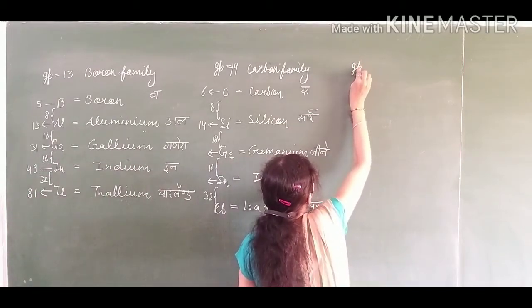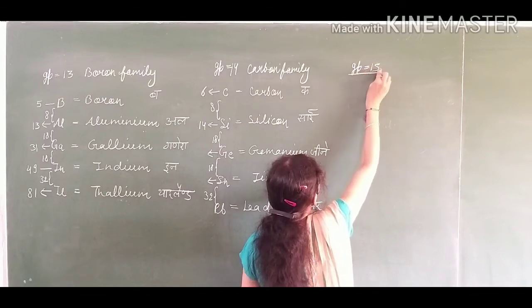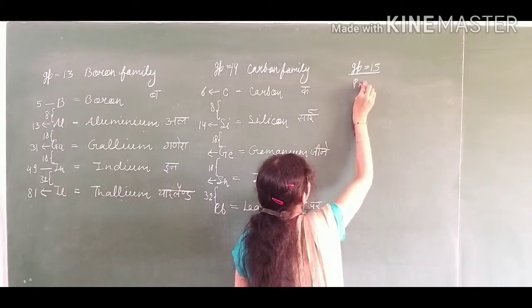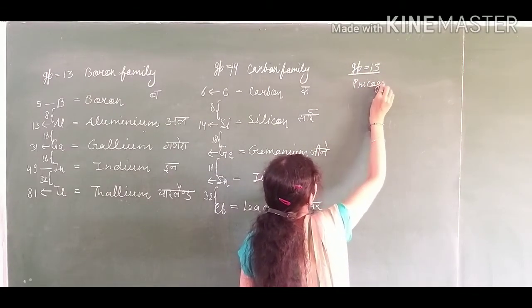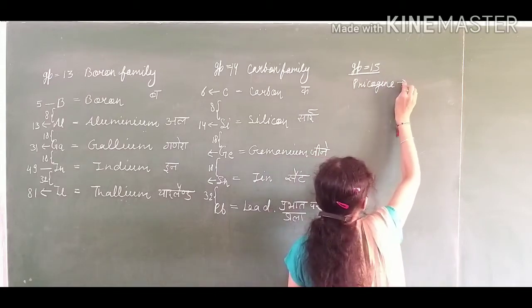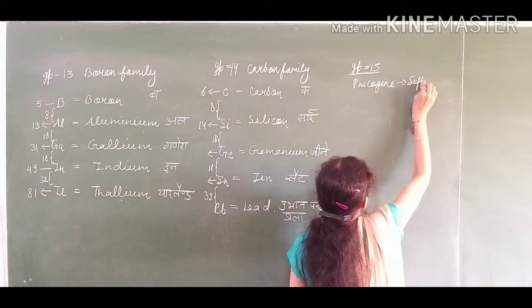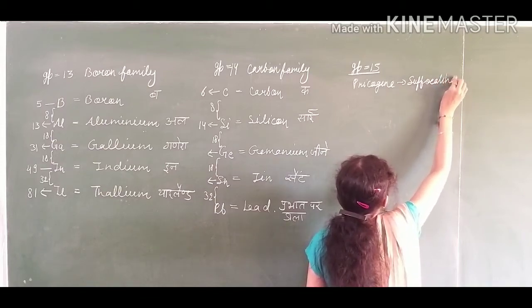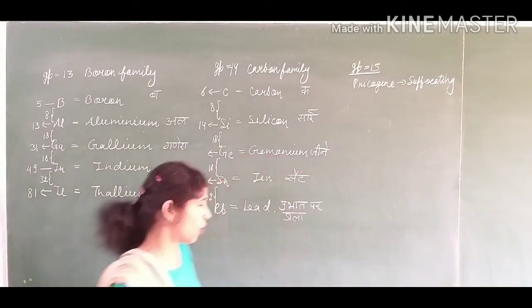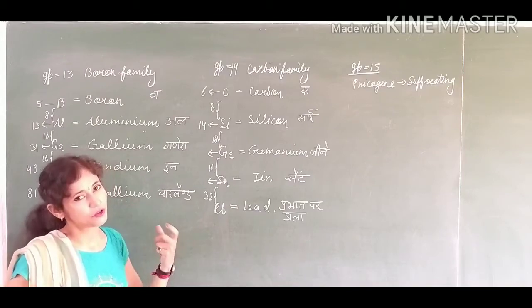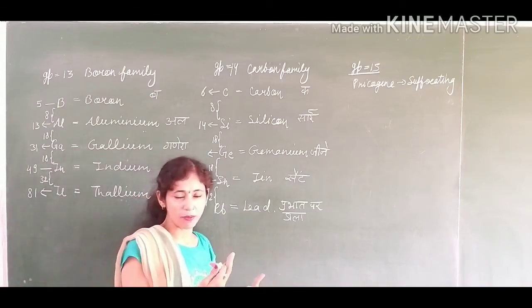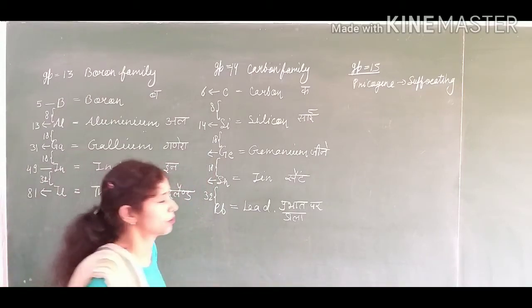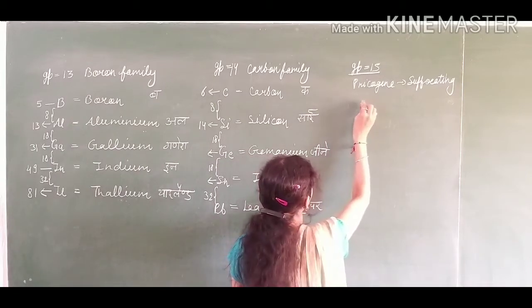Let's talk about group 15. Group 15 we call pnicogen. Pnicogen means suffocating. Suffocating means these elements are suffocating. All the elements, they will be suffocating. If you come in contact with them then breathing system has problems.